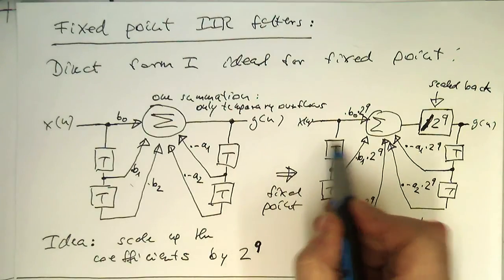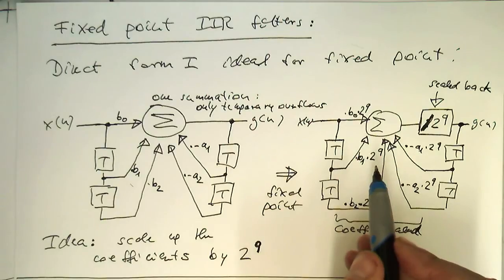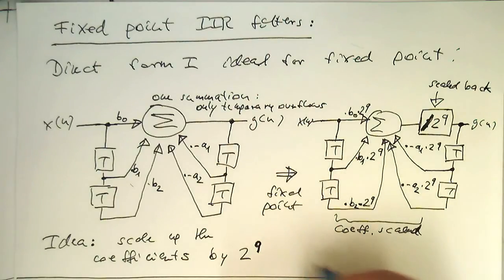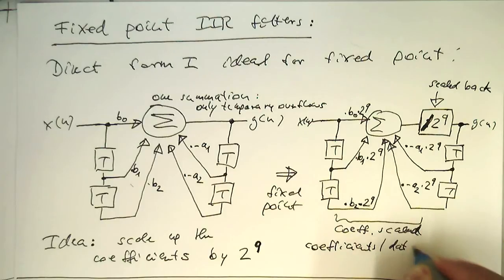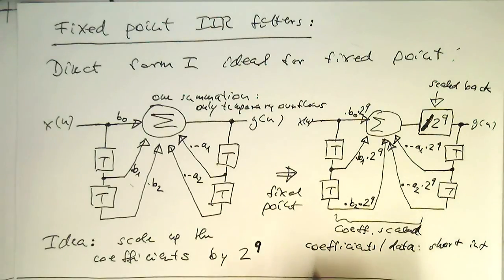And so a classical example, or the classical way, is that the coefficients and the data are presented as short int, and the accumulator as integer.